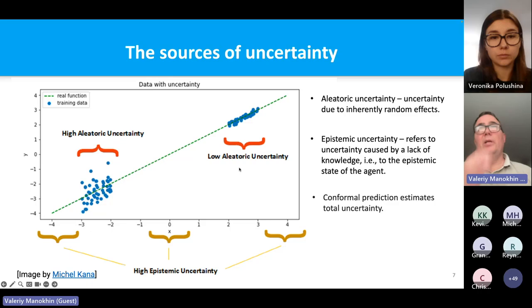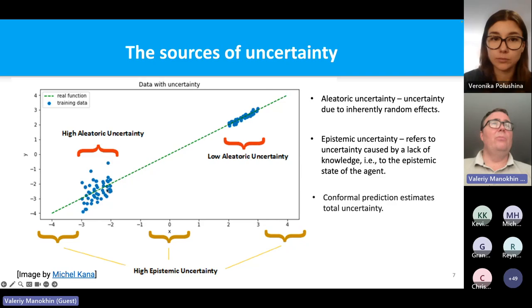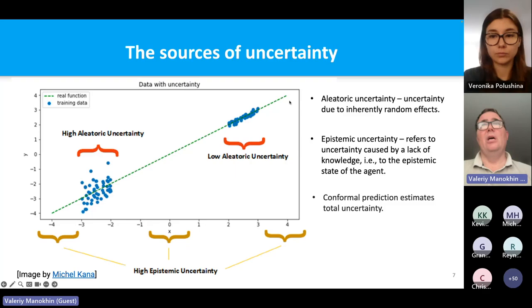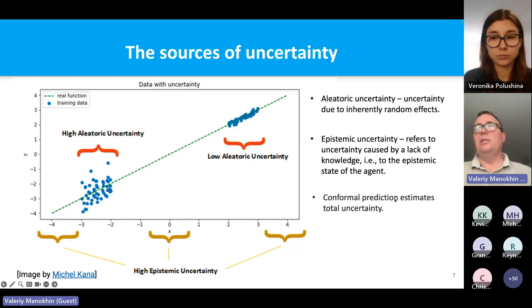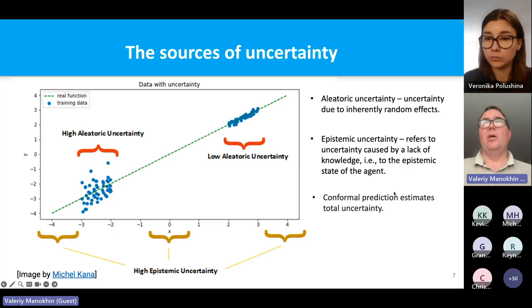Let's talk about sources of uncertainty. One big distinction is aleatoric uncertainty, due to randomness — you see a cloud of points and that randomness exists regardless of any model we fit. Epistemic uncertainty refers to uncertainty caused by lack of knowledge — if you put a straight line through data, areas with no points have high epistemic uncertainty. Conformal prediction doesn't care about which type it is; it quantifies total uncertainty. As long as you build a point predictor and put conformal prediction on top, you catch that total uncertainty.